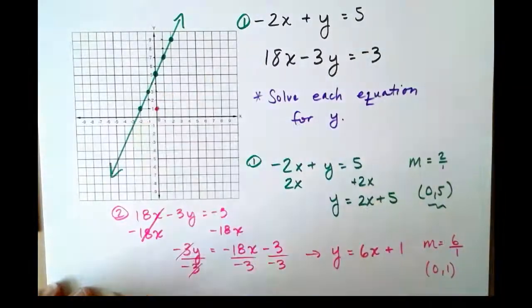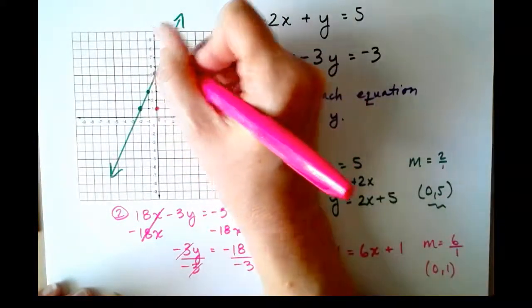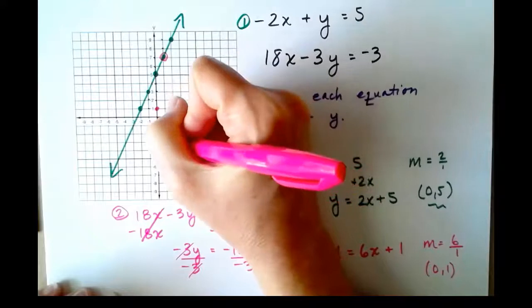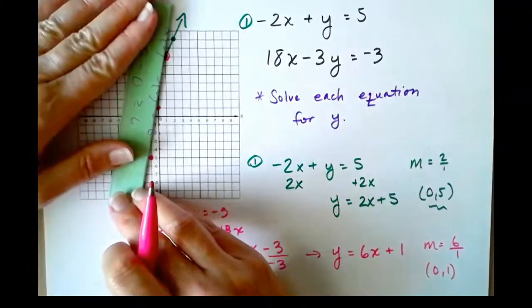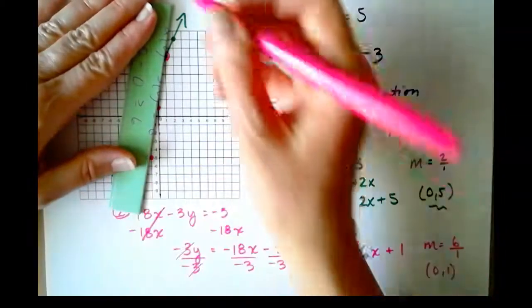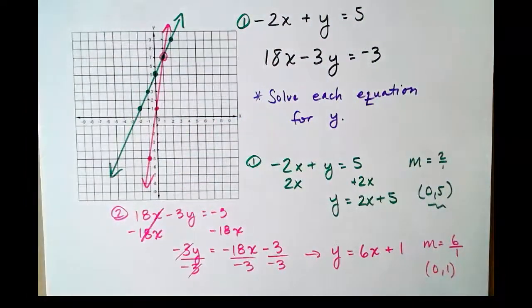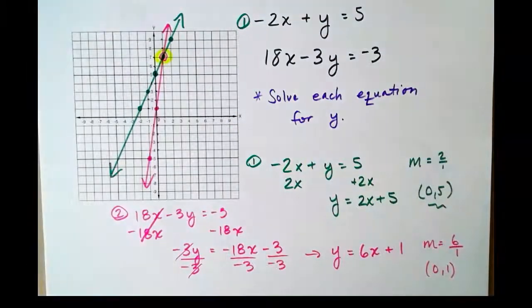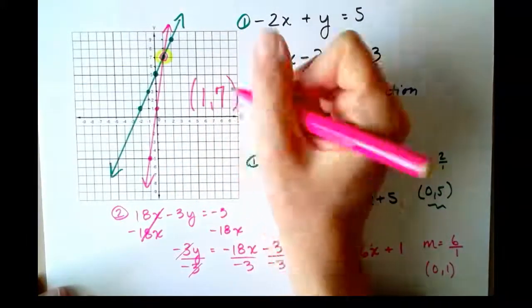Let's plot that point, and then let's rise and run using our slope. 1, 2, 3, 4, 5, 6, over 1, down 2, 3, 4, 5, 6, over 1, and we get our pink line. Like I said, it's very steep because it has a slope of 6, and we can see where the two lines intersect. That's the solution to our system.